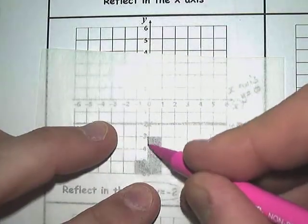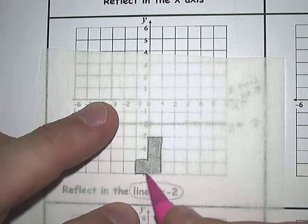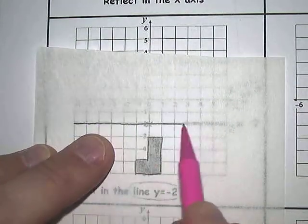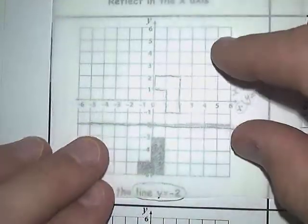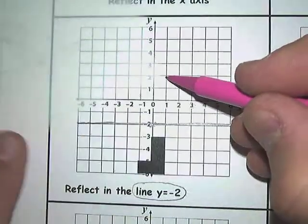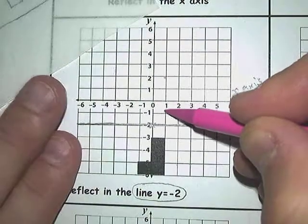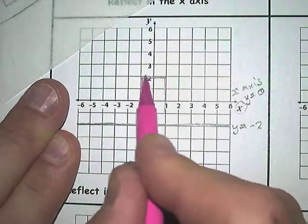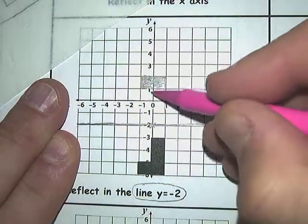I trace the shape. I trace the mirror line. Make sure you get the right mirror line. And then I flip it over. And it's going to go just up there. And it's going to go down that far there. And there we go. One reflected shape.